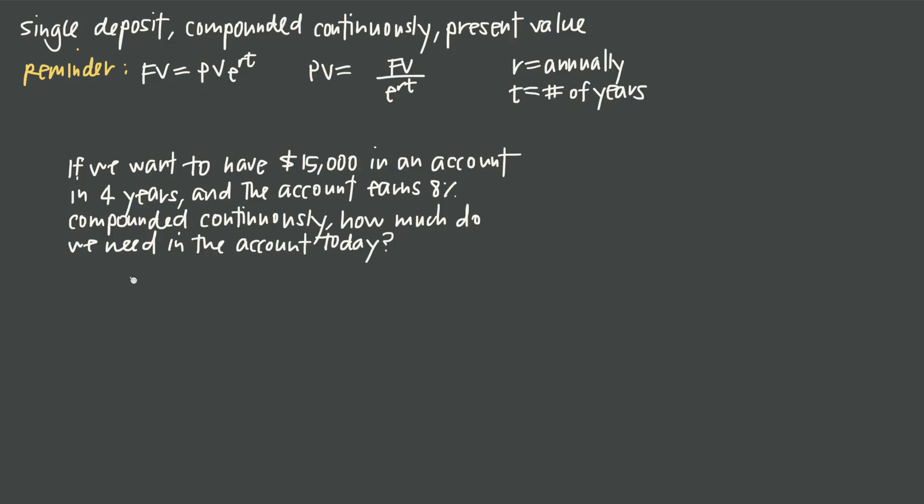Well with problems like these the first thing you want to do is write down everything that we know. We know the future value of the account is going to be $15,000. That's our future amount.